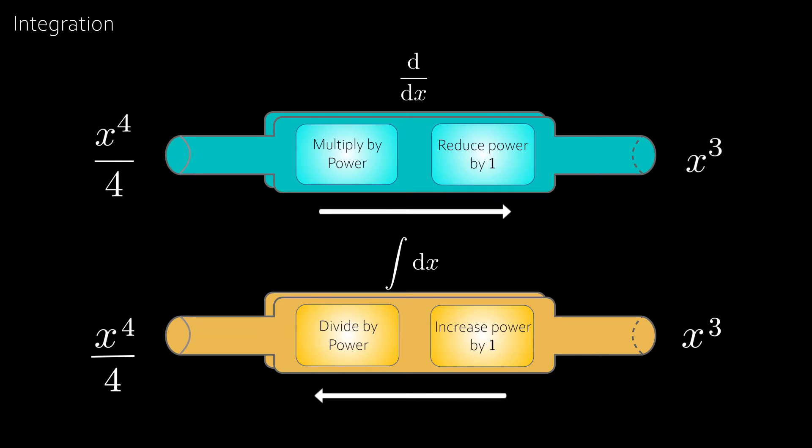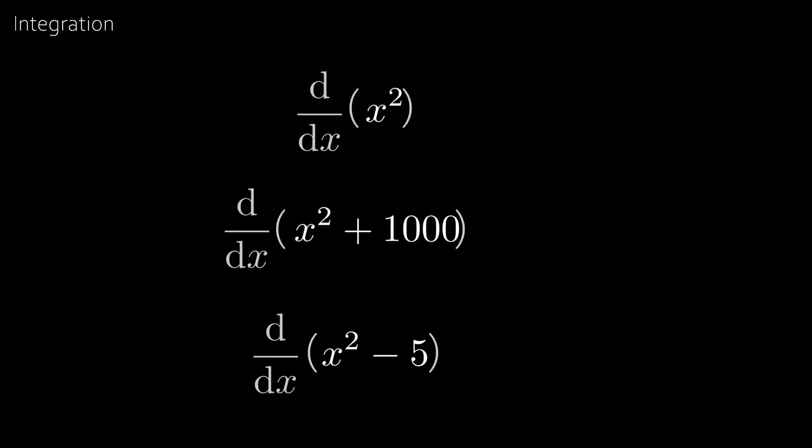Now this is brilliant but not quite 100% correct. We're missing one crucial thing. So take x squared and x squared minus 5 and x squared plus 1000. Then the derivative of all of these functions is 2x.